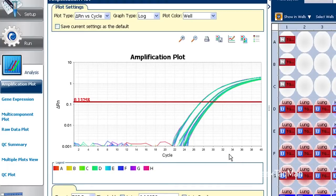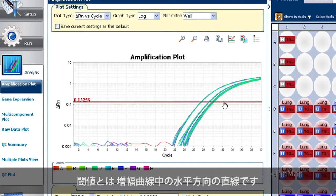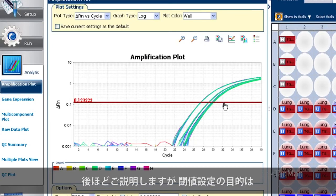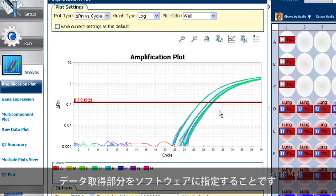Excellent question. The threshold is a horizontal line in our amplification plot that can be moved up or down on the y-axis. Its purpose, as we'll see in a minute, it tells the software where to take data.